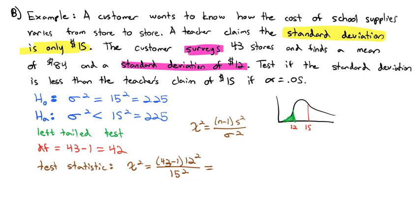The sample size was 43. 43 minus 1 times 12 squared divided by 15 squared, we get a test statistic of 26.88.